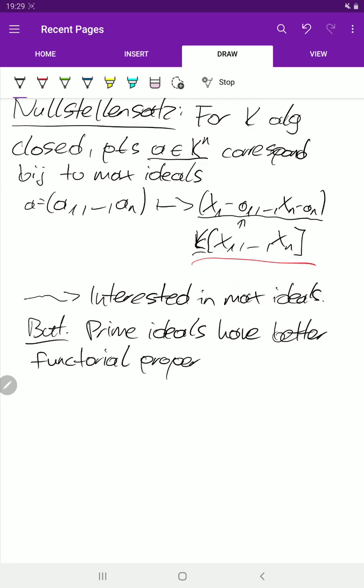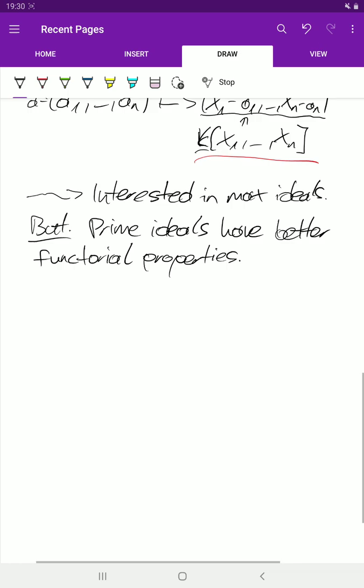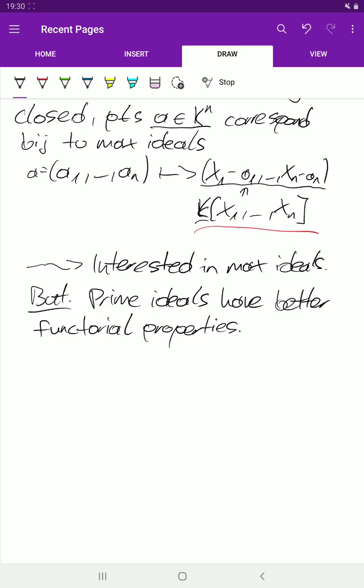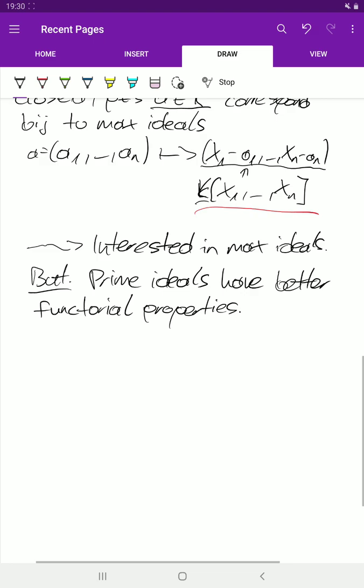With maximal ideals, there are some problems. We consider instead all prime ideals. And if we want to do geometry, we have to look at only the maximal ideals, if we want to do geometry in the classical sense. Now we look at prime ideals.